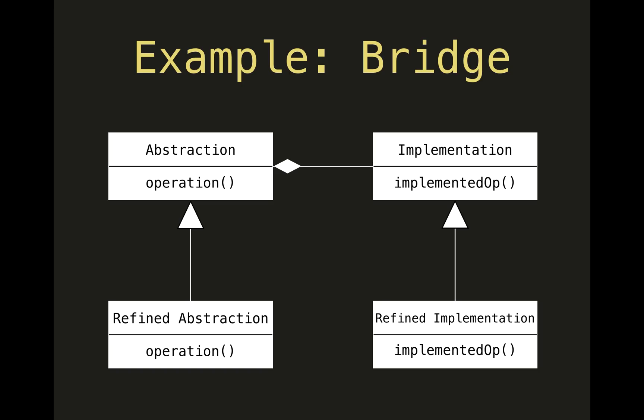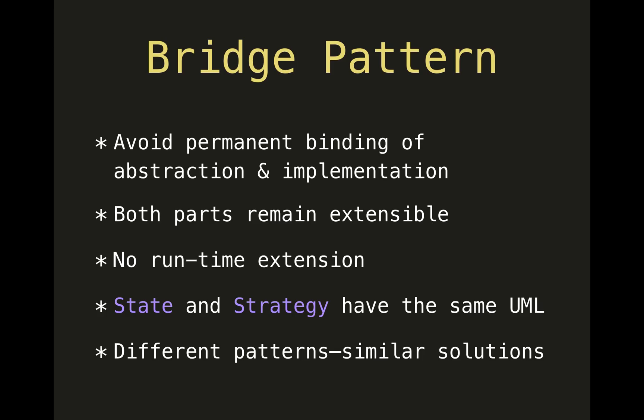An example of such a pattern is the Bridge pattern, which is used when you need to decouple an abstraction or interface from an implementation. You have two hierarchies: one is your interface or abstraction with one or more classes that refine it, but the actual algorithm behind an operation is encapsulated in a different object or class, with subclasses there as well. It allows you to avoid permanent binding between the interface and implementation, giving you more flexibility than hard-coding multiple operations in one place.